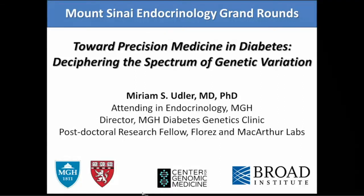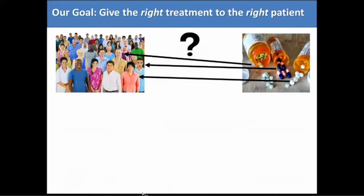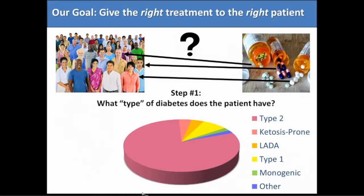I'm going to be speaking about genetics and understanding subtyping of diabetes. At the heart of this is the question of when we see patients in clinic, how do we know which medication to give to which patient, especially now where we're very fortunate that in diabetes there are a number of medications to choose from. Thinking about how to treat each patient, the question on the back of our minds is always: what type of diabetes does this patient have?